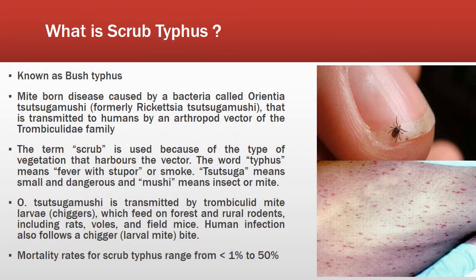So what is scrub typhus? It is also known as bush typhus. It is a mite-borne disease caused by a bacteria called Orientia tsutsugamushi, transmitted to humans by an arthropod vector of the Trombiculidae family. The term 'scrub' is used because of the type of vegetation that harbors the vector. The word 'typhus' means fever with stupor. 'Tsutsuga' means small and dangerous, and 'mushi' means insect or mite.